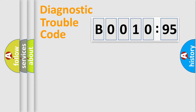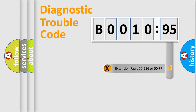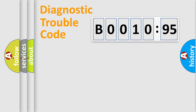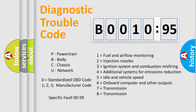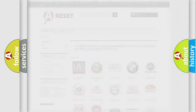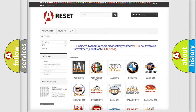Our website airbagreset.sk produces useful videos for you. You do not have to go through the OBD2 protocol anymore to know how to troubleshoot any car breakdown. You will find all the diagnostic codes that can be diagnosed in Chrysler vehicles, along with many other useful things.